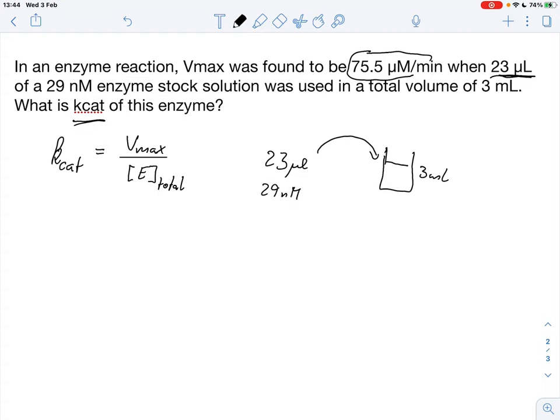So what we can do is we can calculate a dilution factor. In this case the dilution factor would be 23 microliters in a total volume of 3000 microliters. That's our 3 milliliters here.